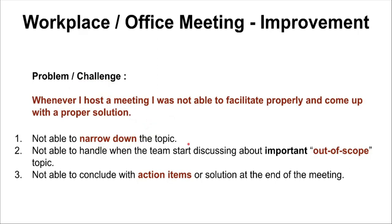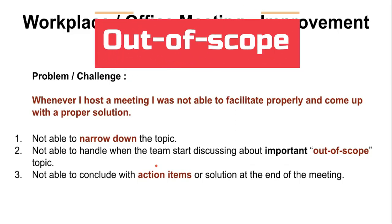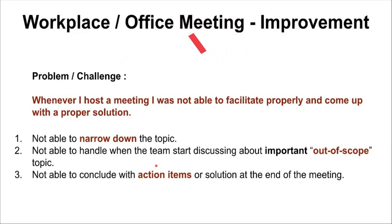I go to the meeting with an abstract topic so I'm not able to narrow down the topic. The second challenge is I'm not able to handle when the team starts a discussion about an important but out-of-scope topic. For example, during the meeting someone will ask a question which is very important but out of scope, and then the entire team will start discussing about it, so we will not be able to utilize the time efficiently.